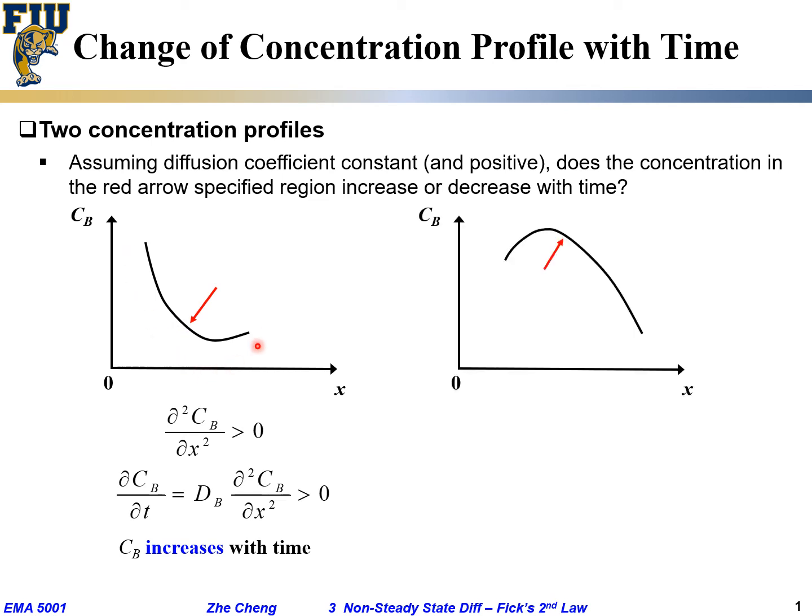Similarly, if we have a concentration profile something like this, we are plotting again concentration versus location, so-called concentration profile. But where I'm pointing, what about the curvature?